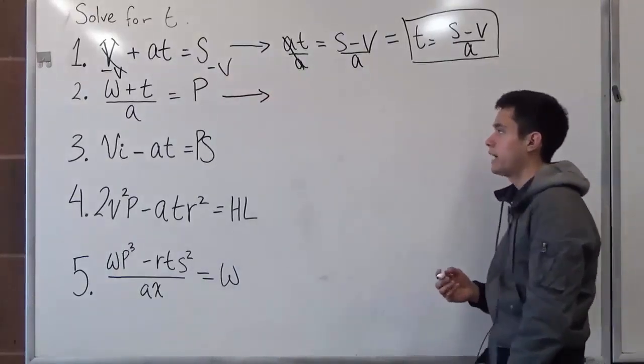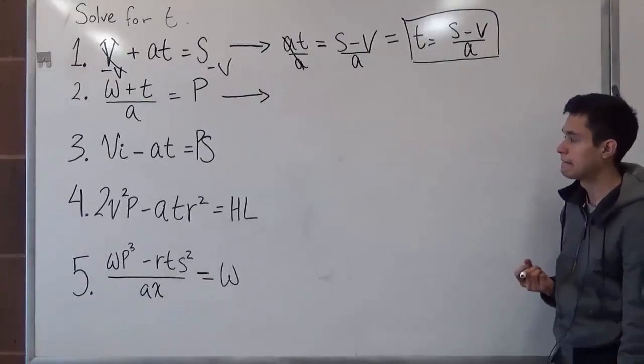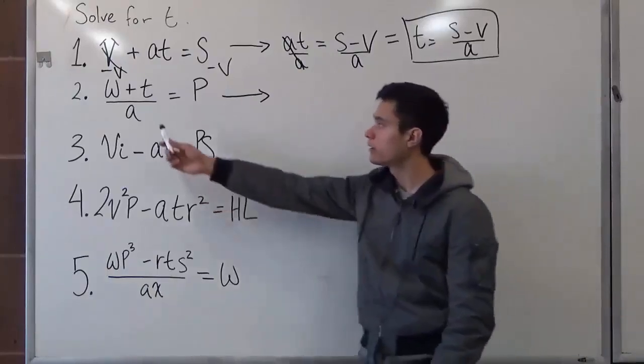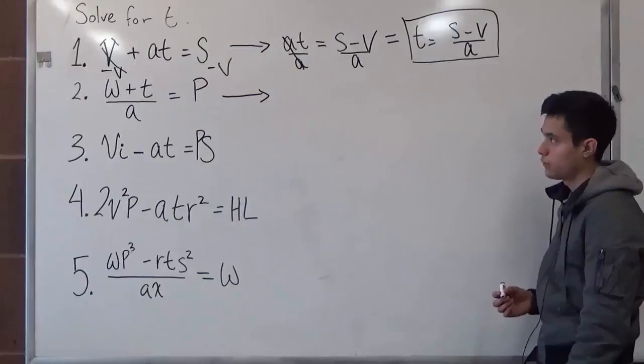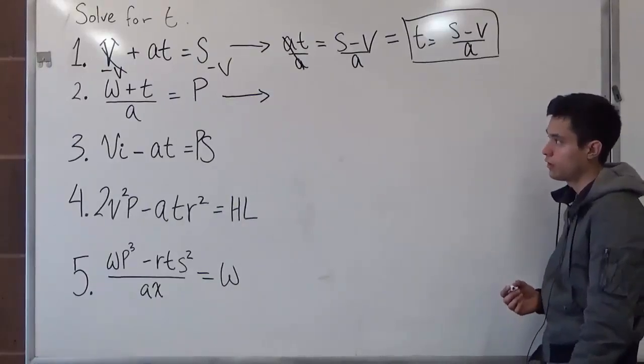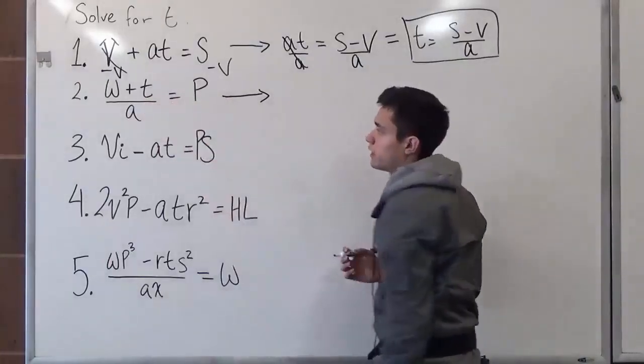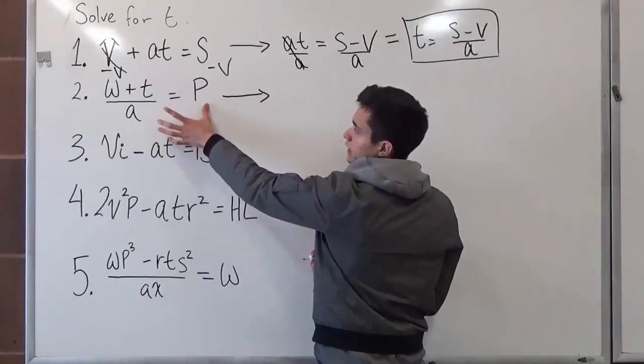In problem number two, we have w plus t over a is equal to p. So this is going to be a little bit trickier because we have a denominator, and our denominator is a. So first and foremost, we want to move. Well, as we always know, we want to get t on one side. But in order to do that, we have to move this denominator on this side.